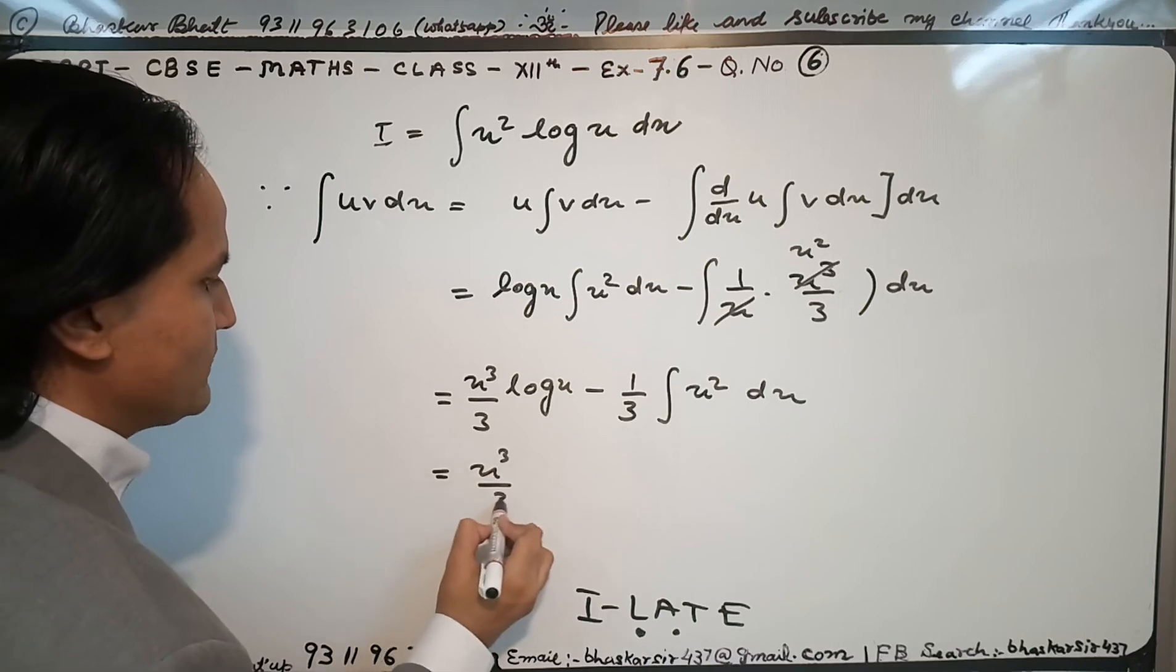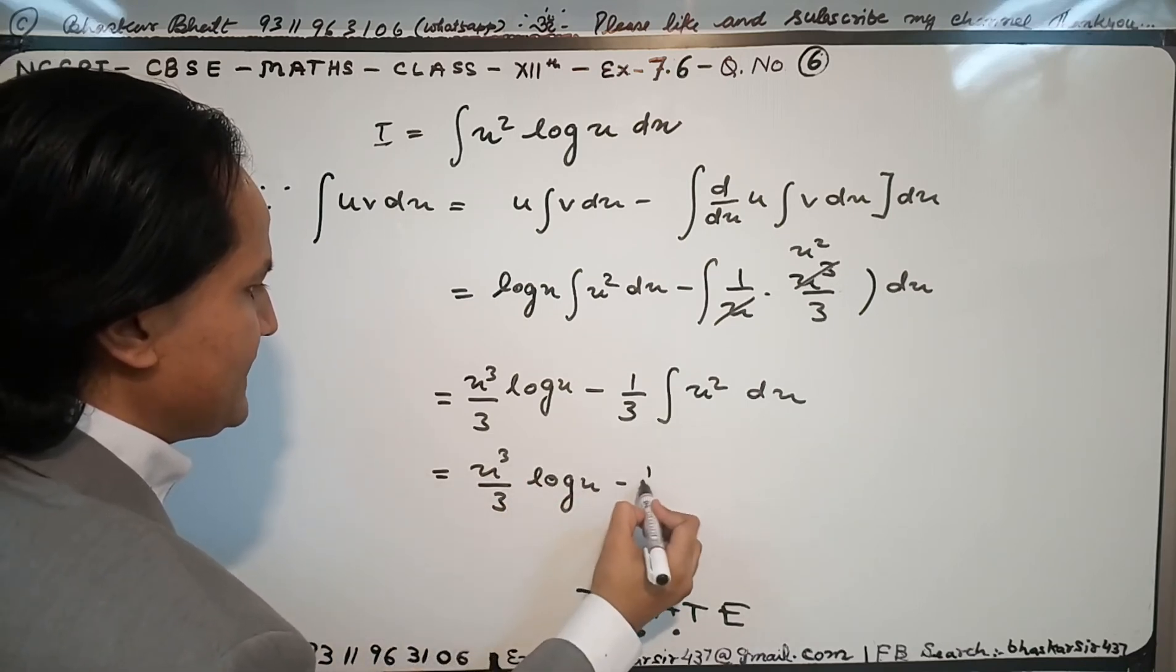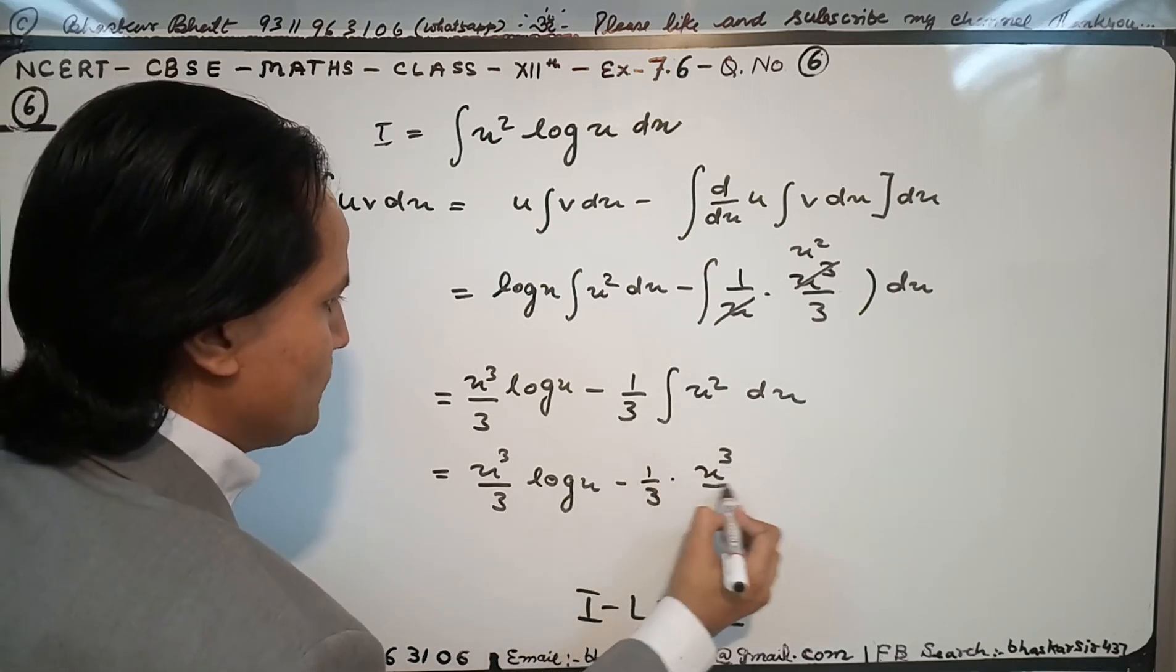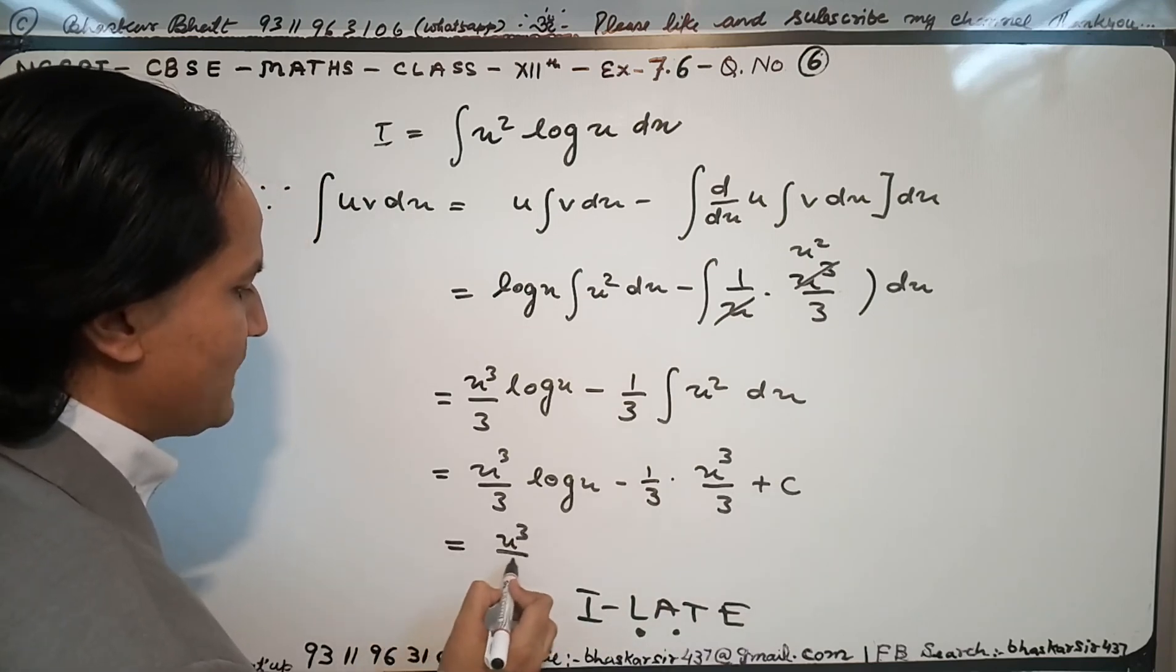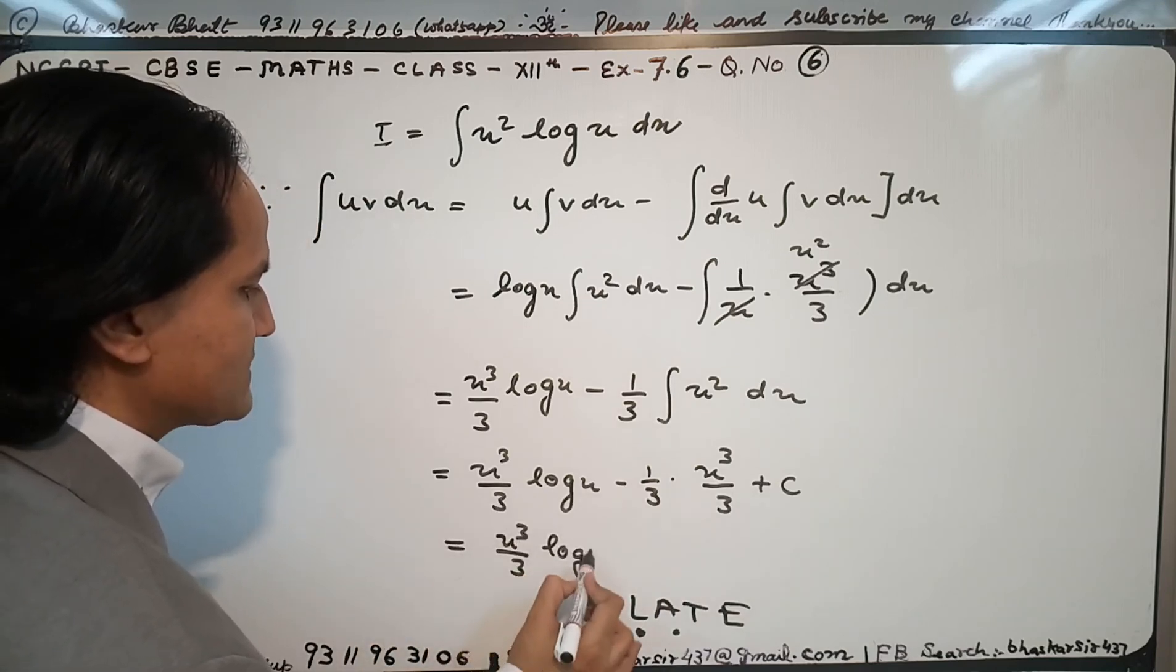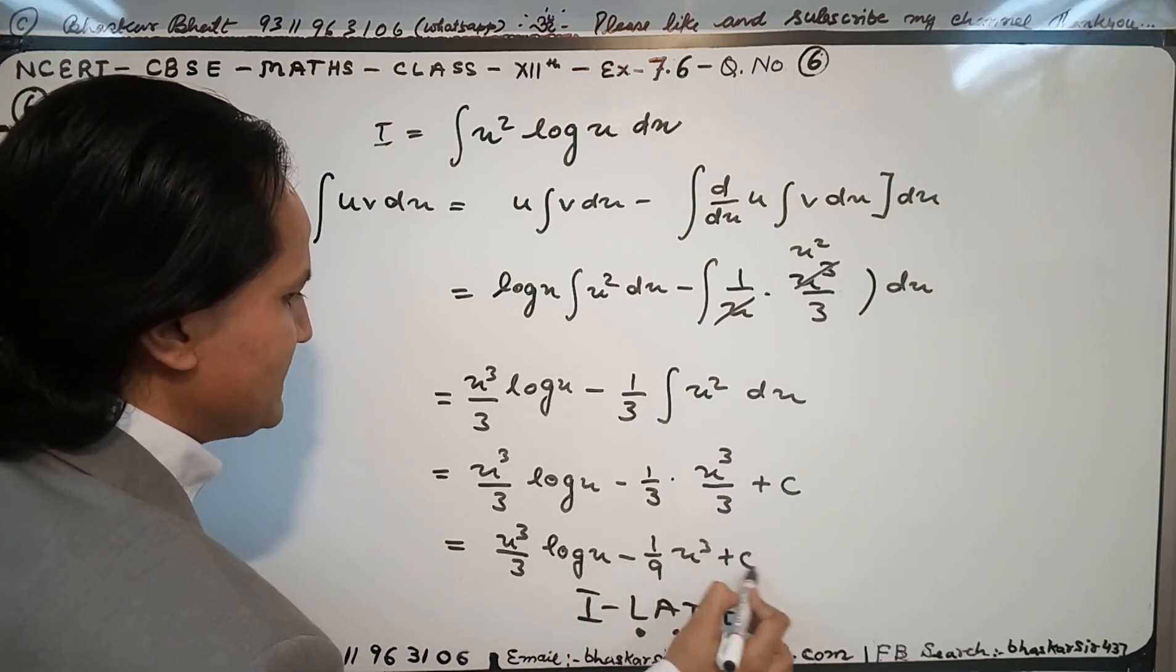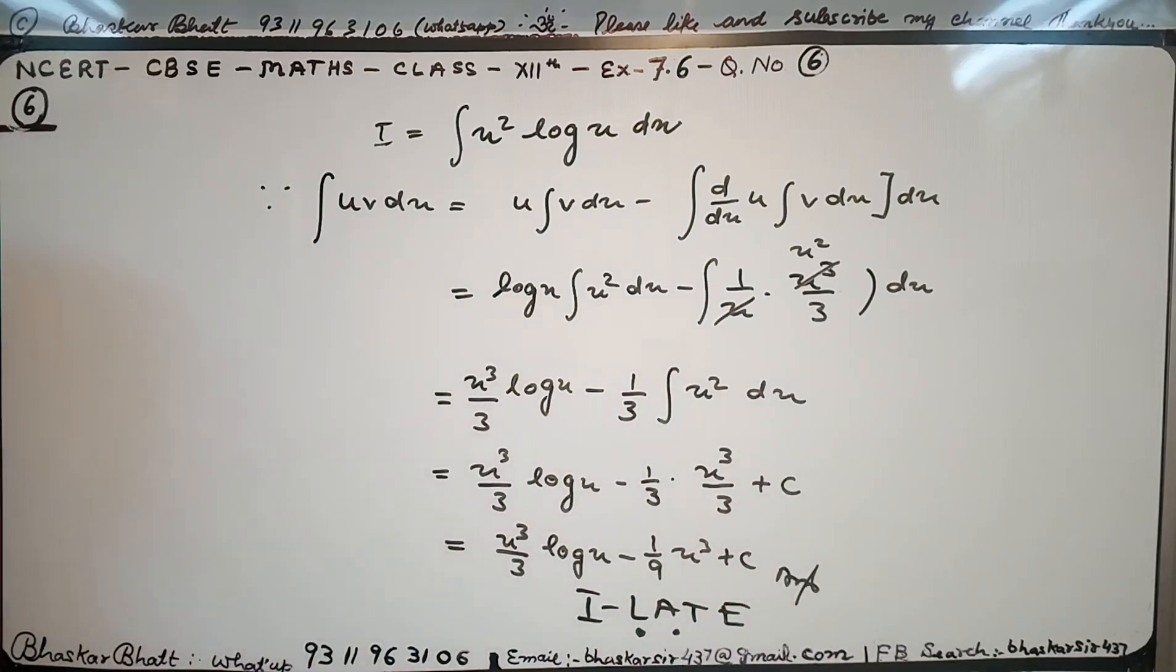Now x cube upon 3 log x minus, and integrating x square, I will get x cube by 3 plus c. And that is the final answer: x cube by 3 log x minus 1 upon 9 x cube plus c. That's the required answer. Hope you enjoyed this video. Thank you very much.